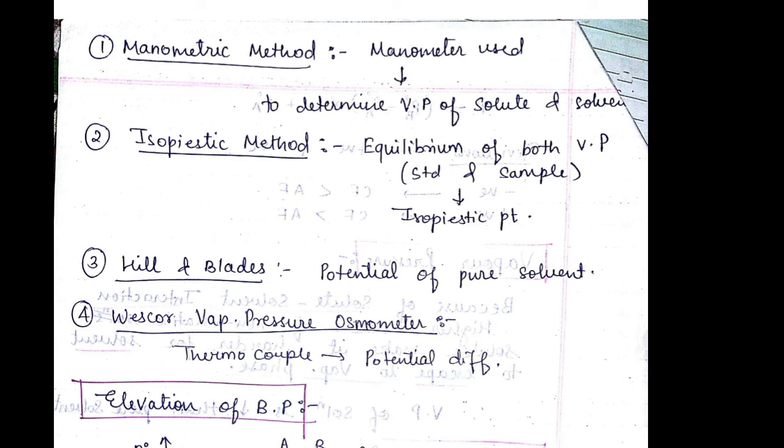What are the methods to determine the lowering of vapor pressure? First method is manometric method. Second is isopiestric method. Third is Hill and Blades method. Fourth is Vescore vapor pressure osmometer.